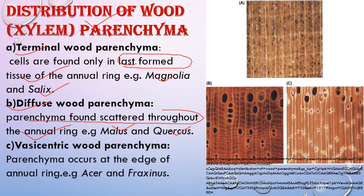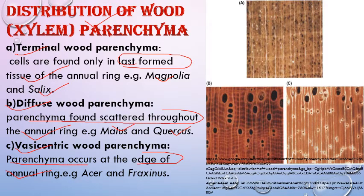The third type is vasicentric wood parenchyma, where parenchyma is restricted to the edges of the annual ring. It is shown by some plants like Acer and Fraxinus.